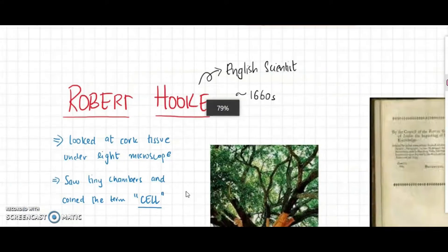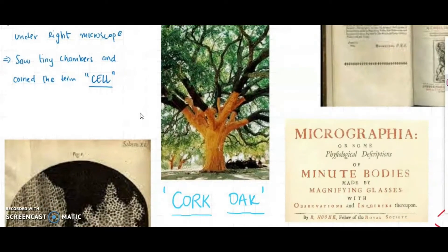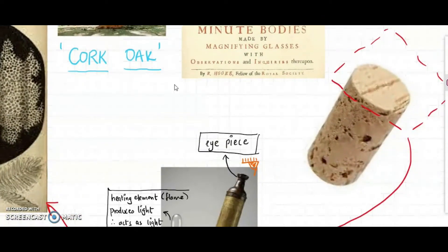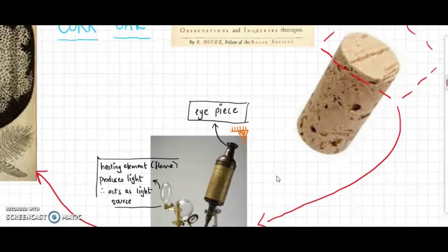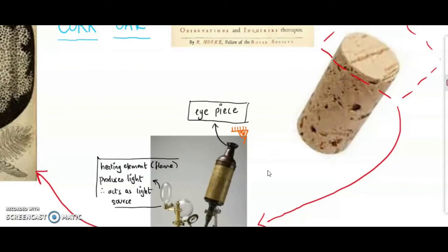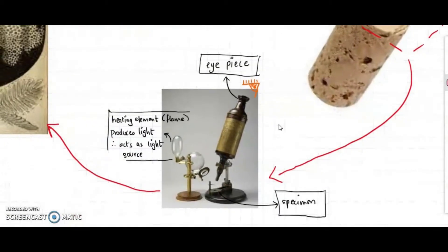In particular, he studied cork, made from the bark of a cork oak tree. He cut thin slices of cork and viewed them under his primitive light microscope. The microscope had a light source — essentially a flame — which directed light towards the mount where the specimen was placed, and he viewed the specimen through the eyepiece. So he cut really thin slices of cork and viewed them under his microscope.